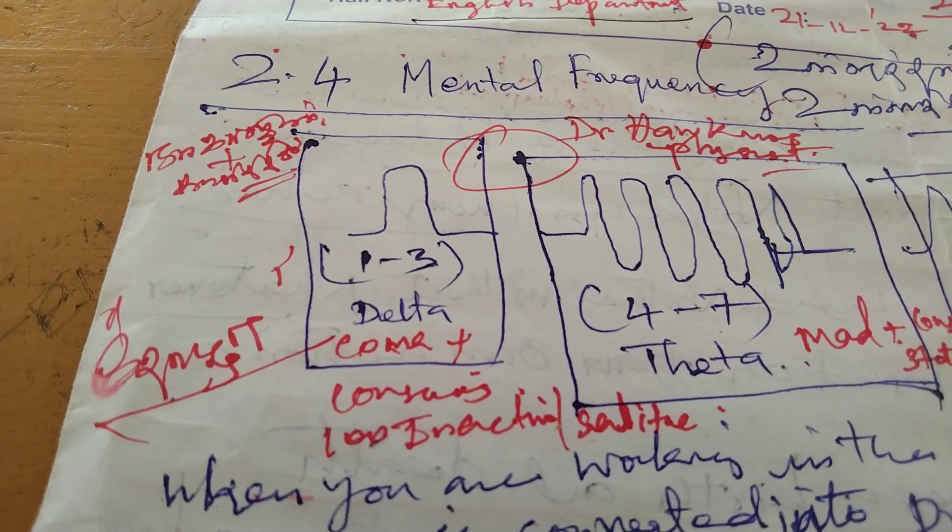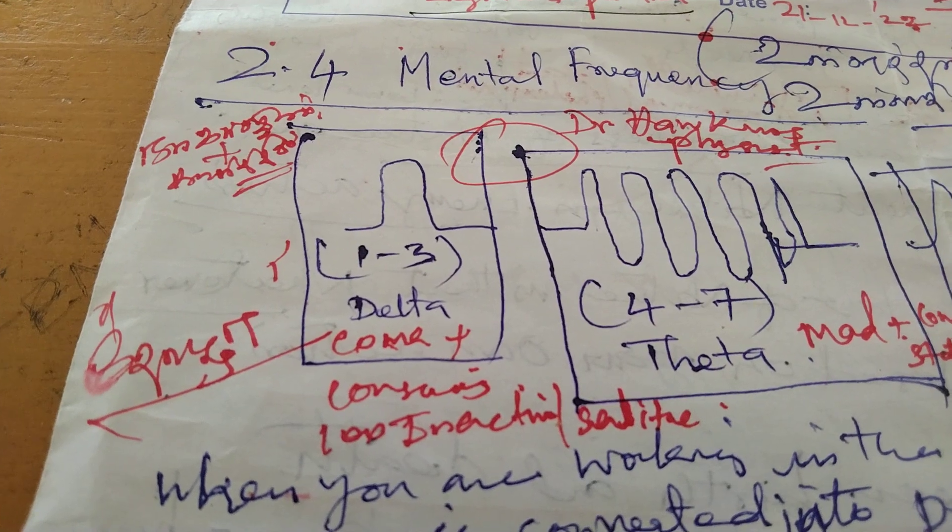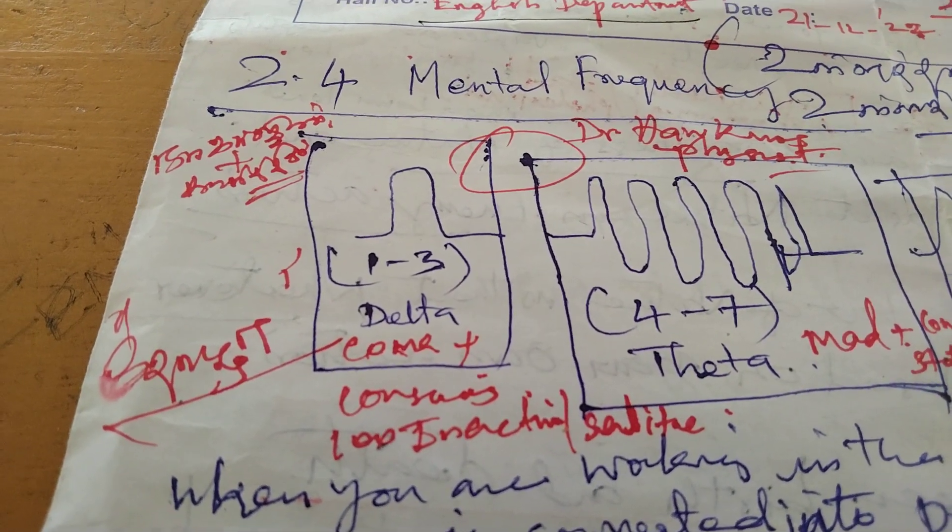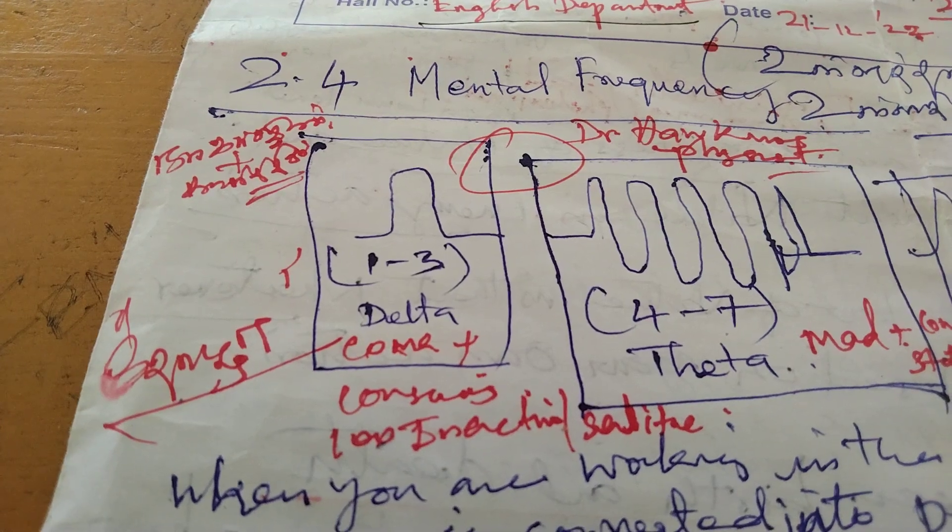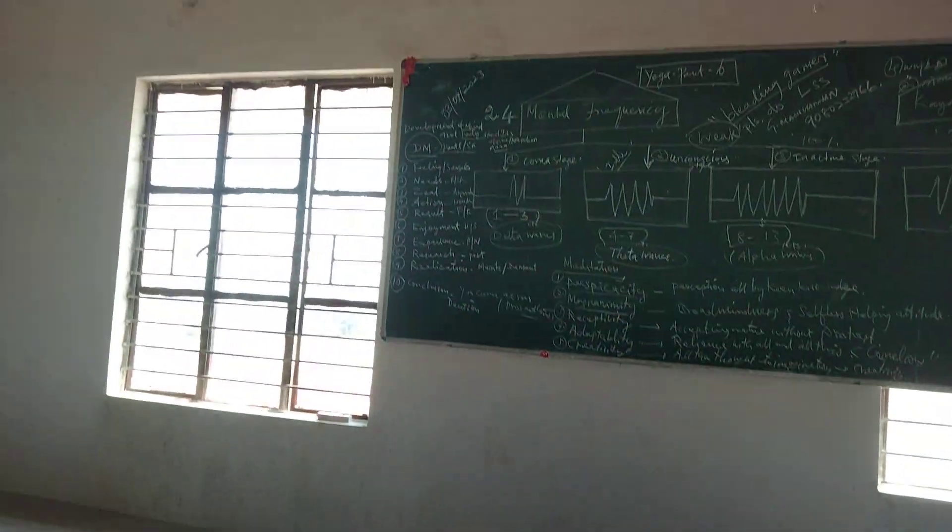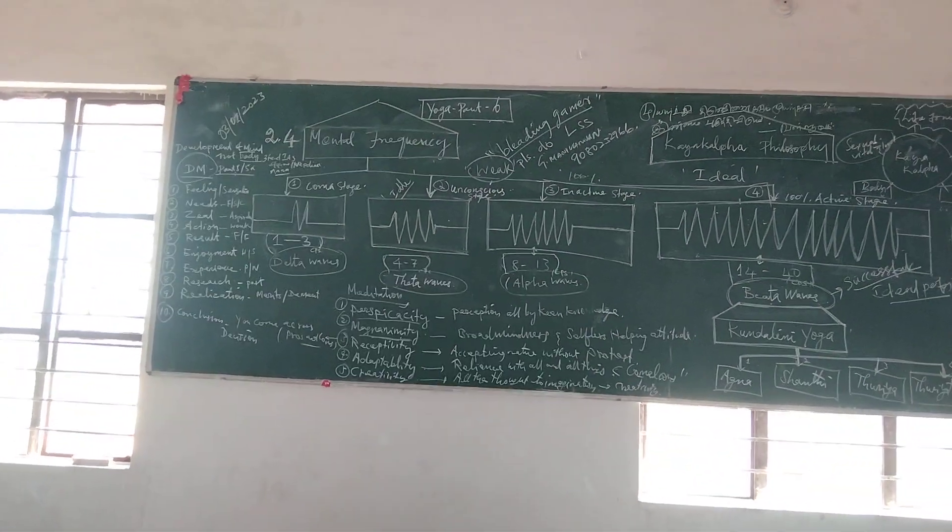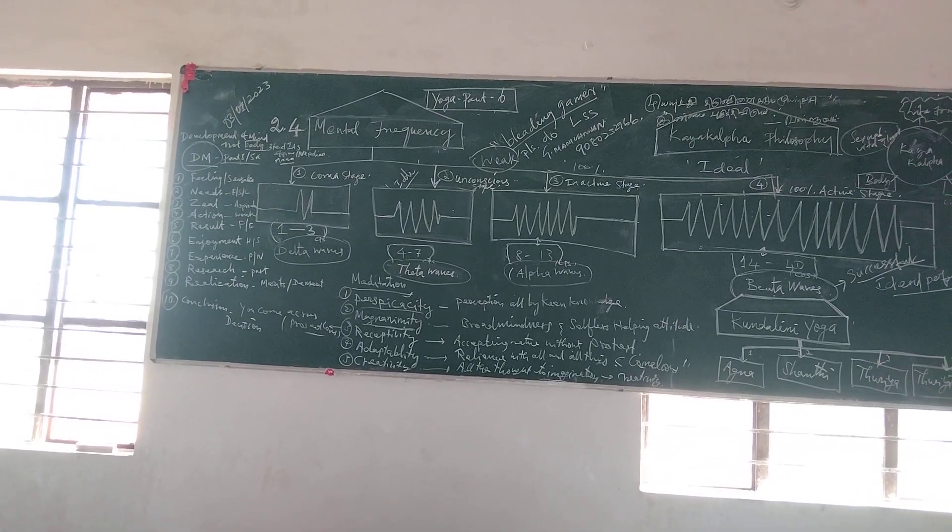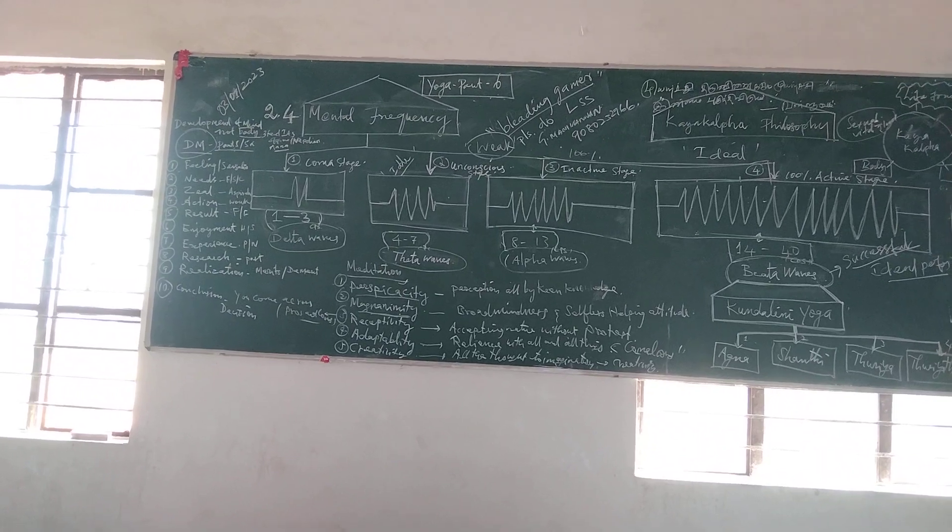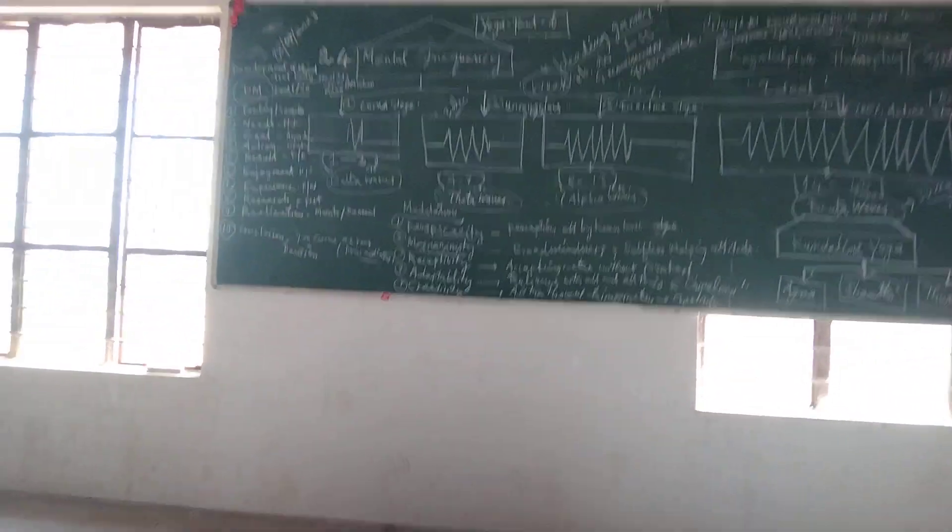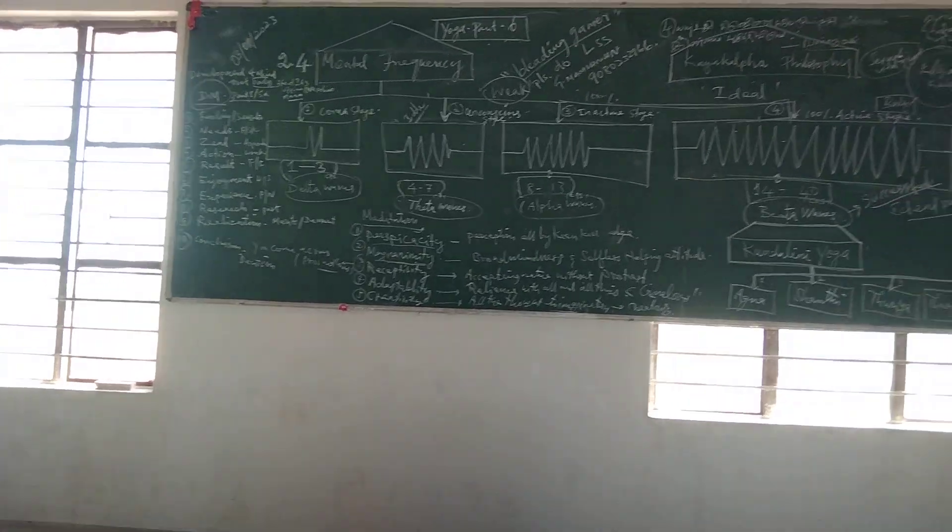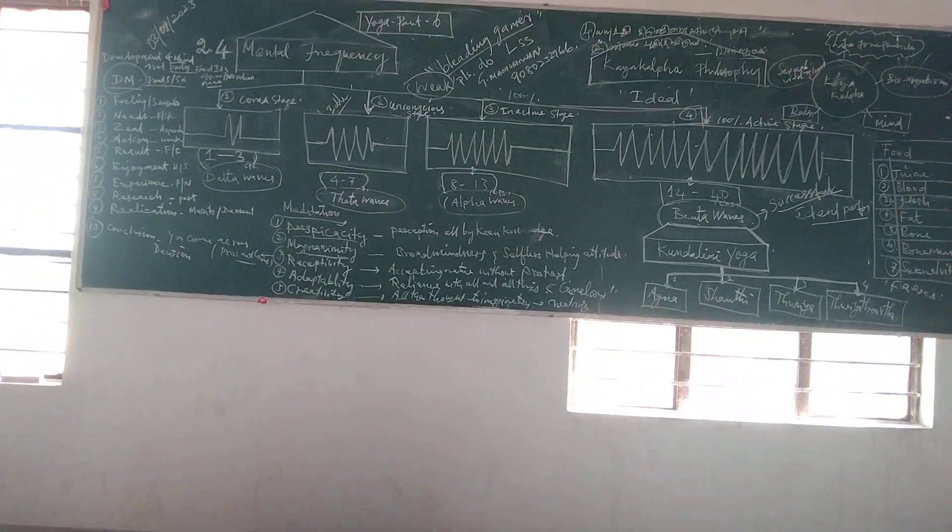Nagarjun is in the state of delta state. Karthik pours hot water on his thigh to test whether he has sense and feelings or not. Sensation and feelings, mind state needs zeal, actions, results, enjoyment, experience, research, realization, and conclusions. These are the sound mind states we must have in this life.